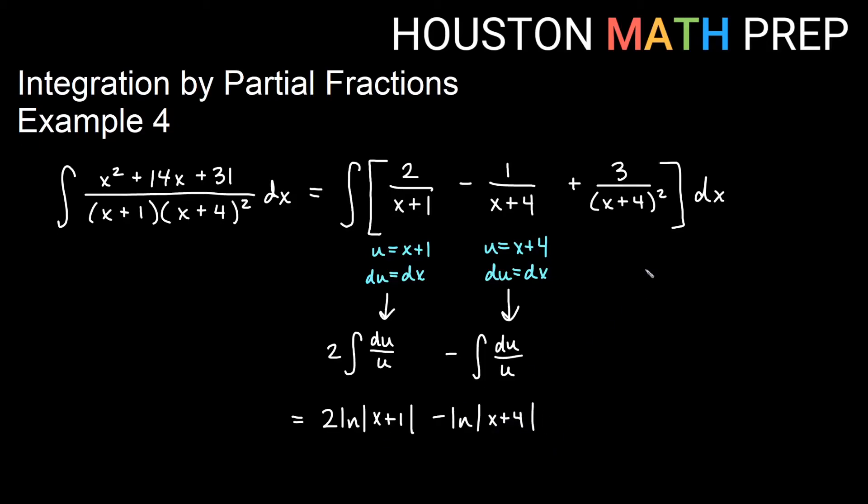For our last one, if we let u equal x plus 4 again and du is dx, then for this one we get—I'll pull the 3 out—3 du over u squared. You could actually think of this as 3 integral of u to the minus 2 du, and then that becomes a power rule. This becomes 3 times...